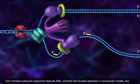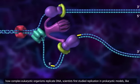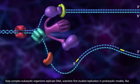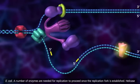In order to understand how complex eukaryotic organisms replicate DNA, scientists first studied replication in prokaryotic models like E. coli.